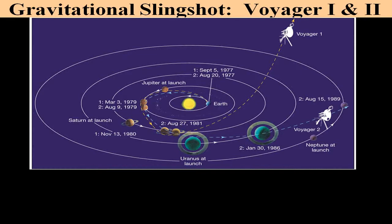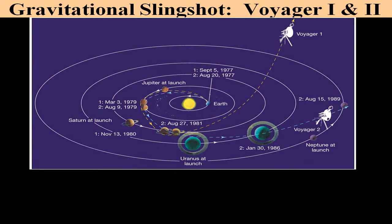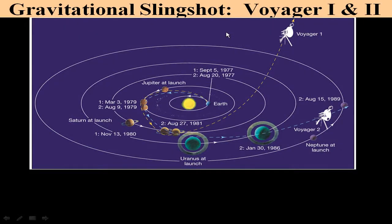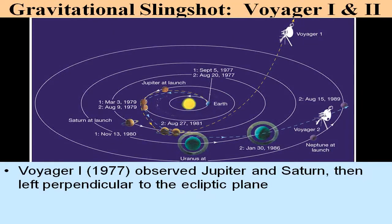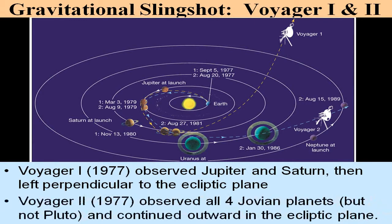The Voyagers were slingshot off an interior planet and headed toward the Jovian planets. The Voyagers went past Jupiter, slingshot past them on their way to Saturn, and then slingshot past Saturn. Voyager 1 then went perpendicular to the solar system, while Voyager 2 continued on to see Uranus and Neptune. So Voyager 1 observed Jupiter and Saturn, then left perpendicular to the ecliptic plane. Voyager 2 was the only spacecraft to have visited all four Jovian planets, though it did not go to Pluto.